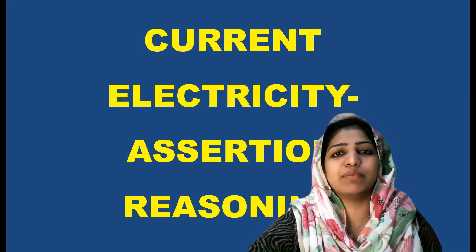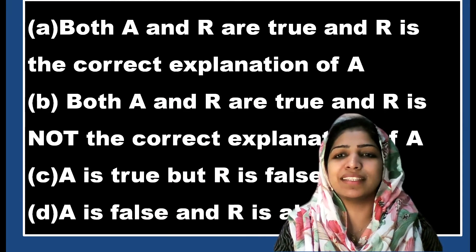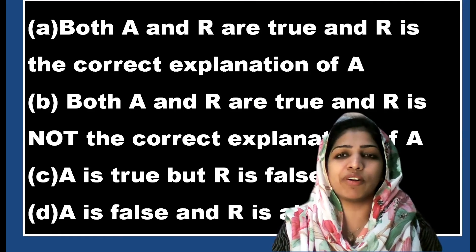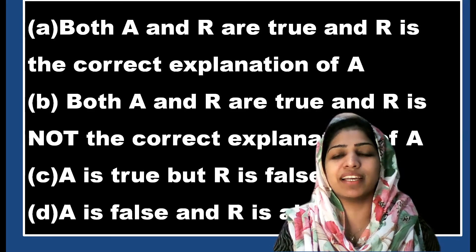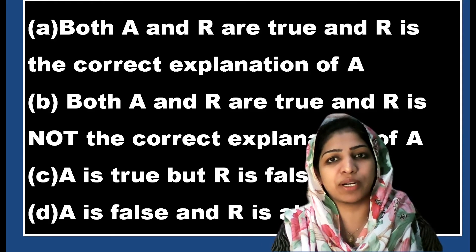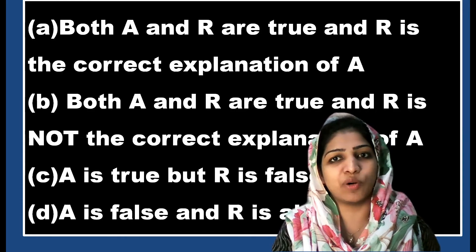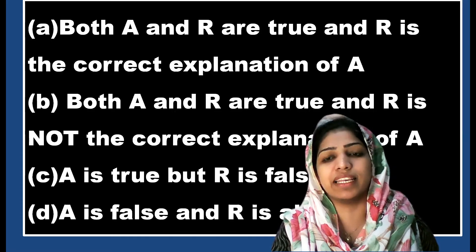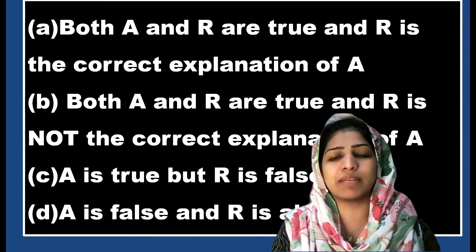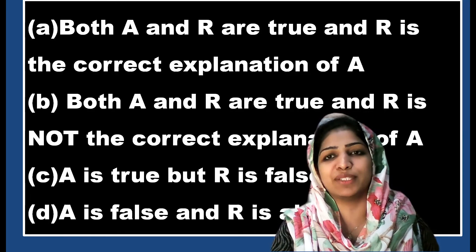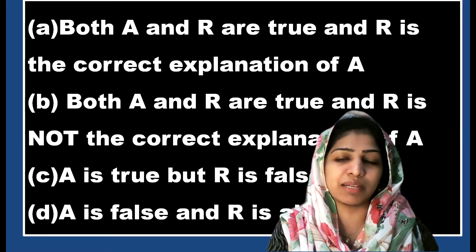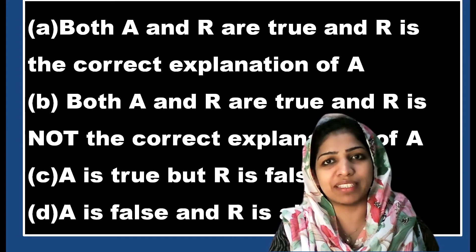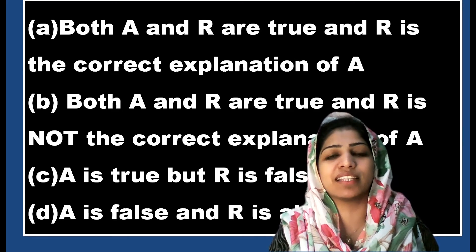Assertion and reasoning questions are basically an advanced version of true or false questions. There are two statements: one assertion and one reason. If both the assertion and reason statements are true and the reason correctly explains the assertion, we choose option A. If both are independently true but not interrelated, we choose option B. If the assertion is true and the reason is false, we choose option C. If the assertion is false, we choose option D.